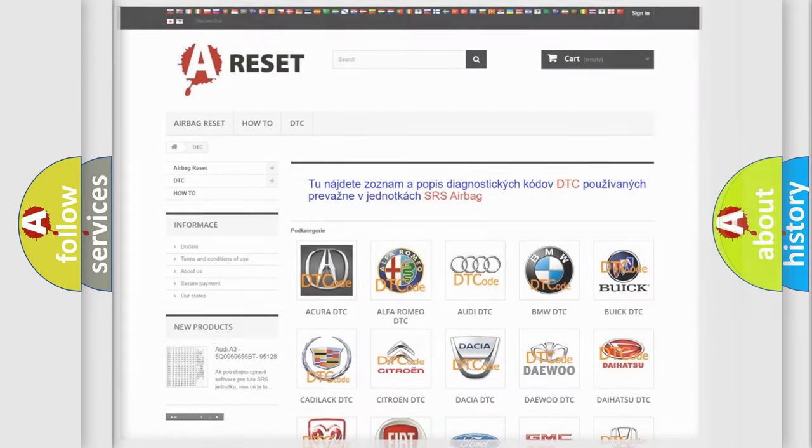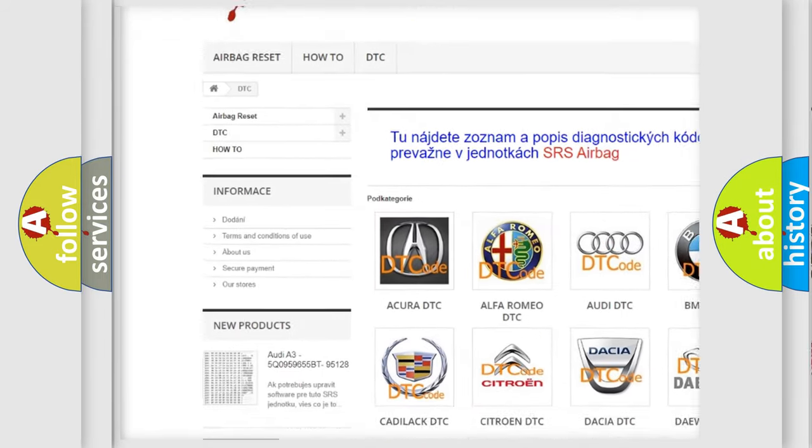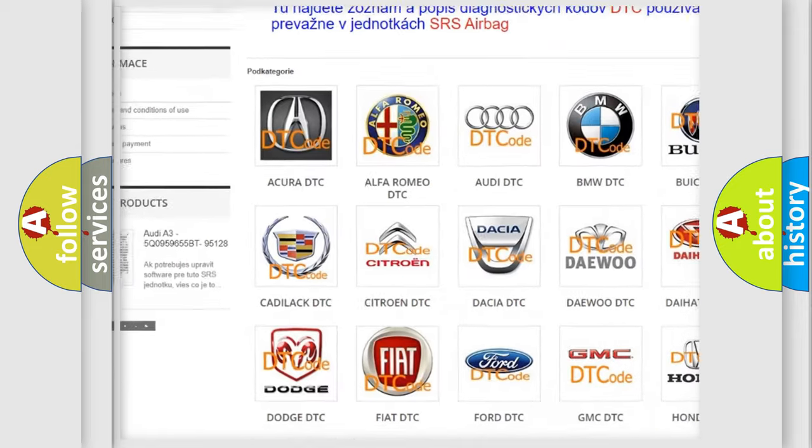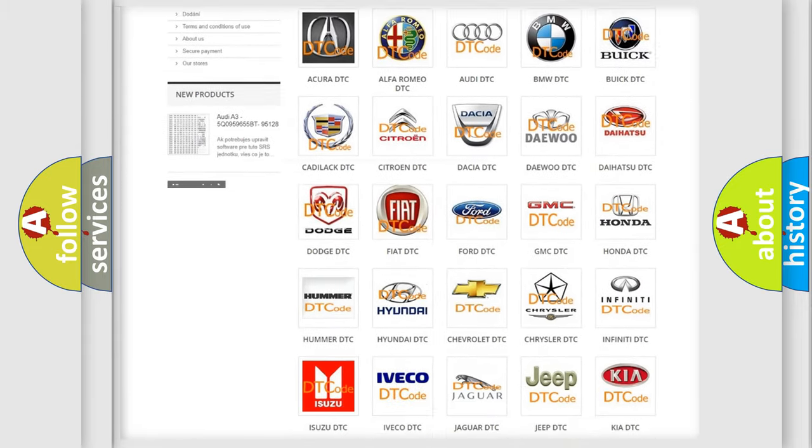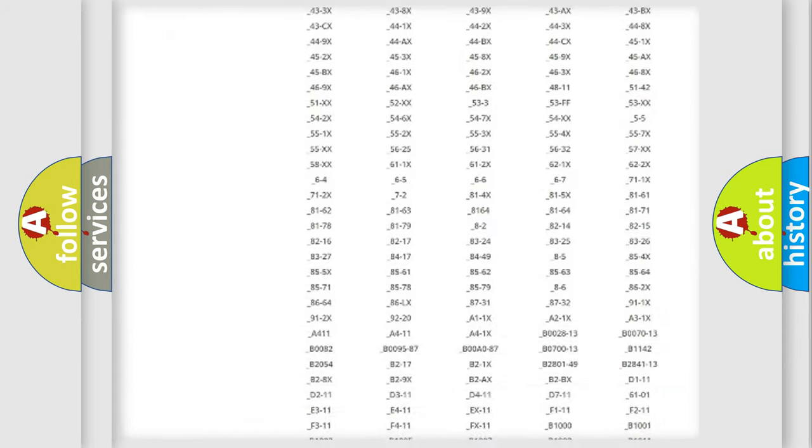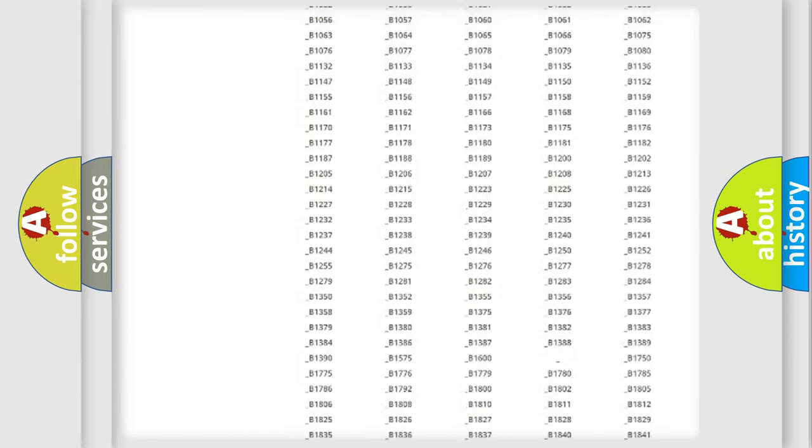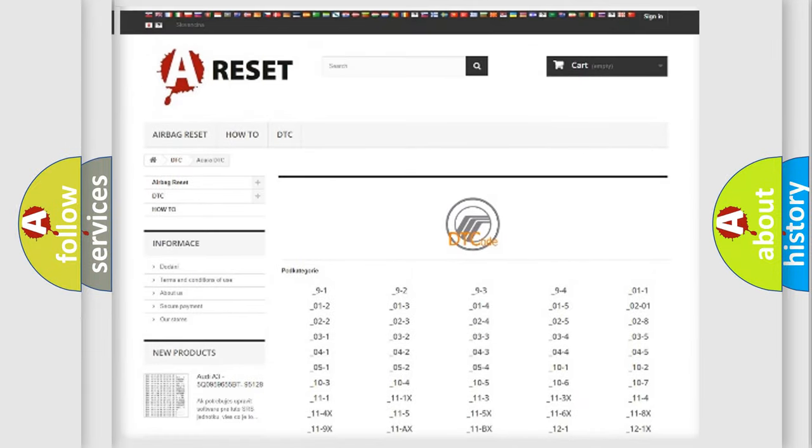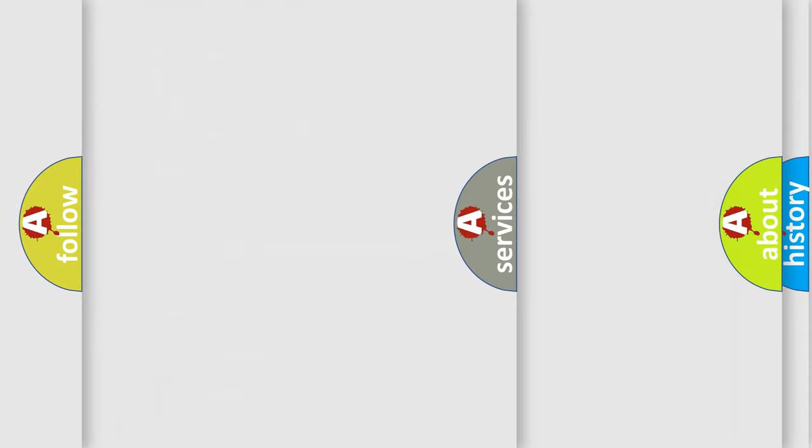Our website airbagreset.sk produces useful videos for you. You do not have to go through the OBD2 protocol anymore to know how to troubleshoot any car breakdown. You will find all the diagnostic codes that can be diagnosed in Mercury vehicles, and also many other useful things.